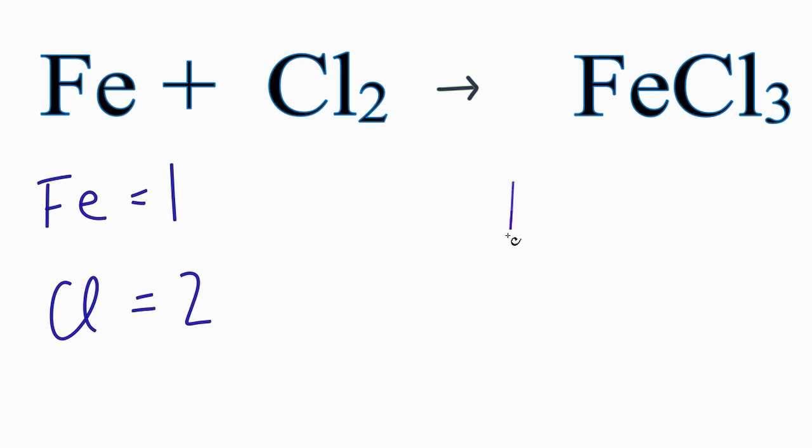On the product side, we have one iron atom, and chlorine, we have three. So the irons are balanced with one on each side, the chlorines are not.